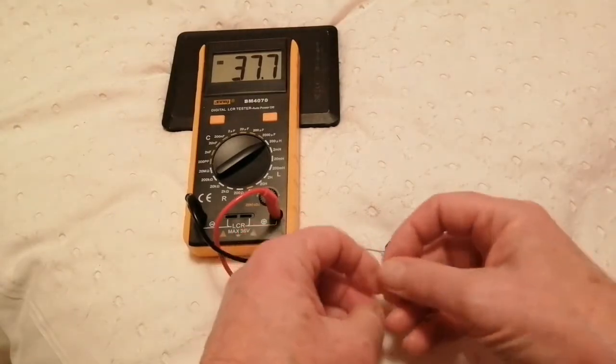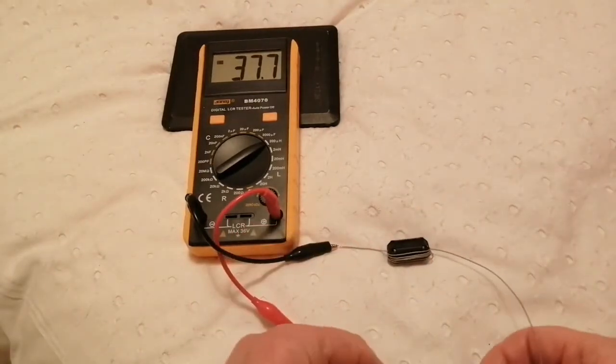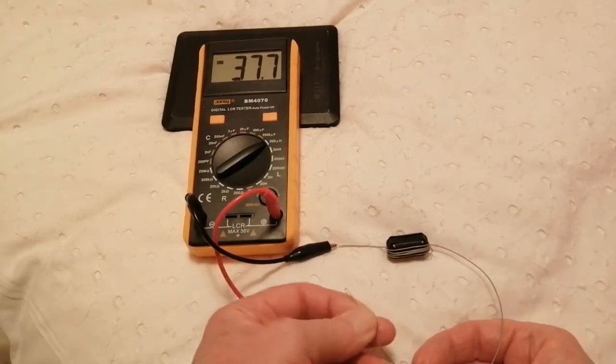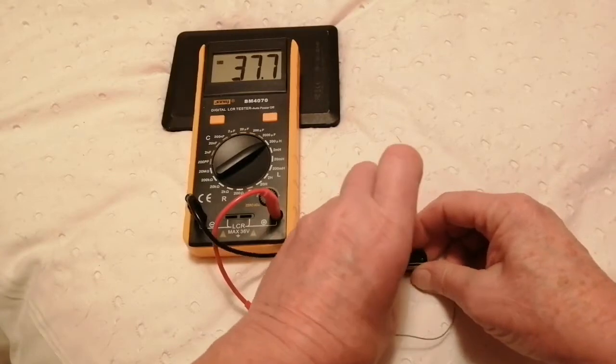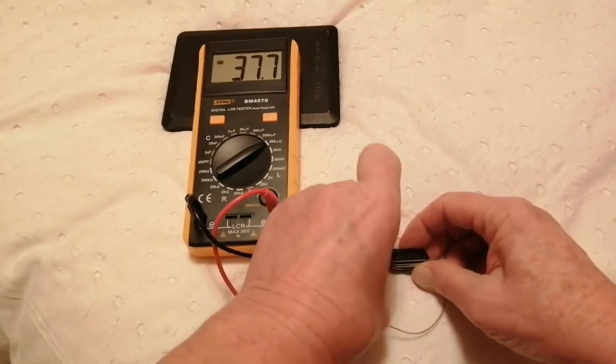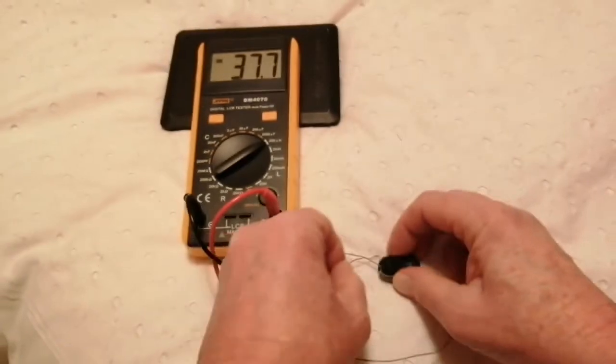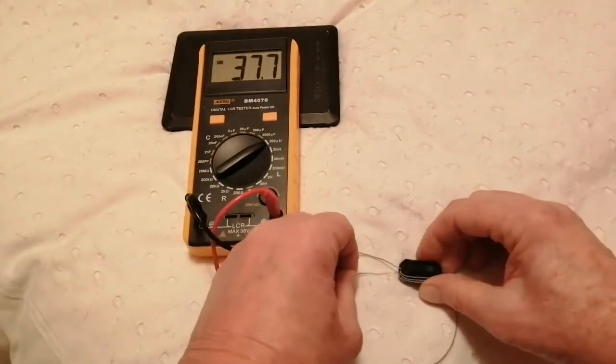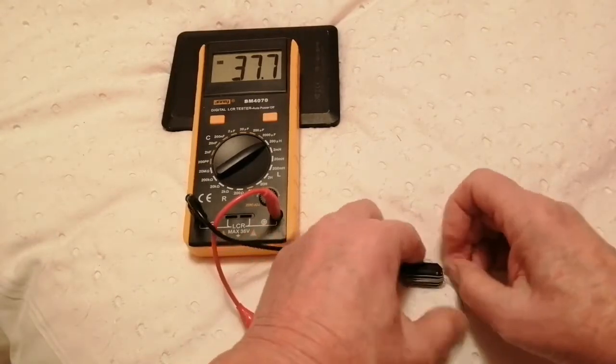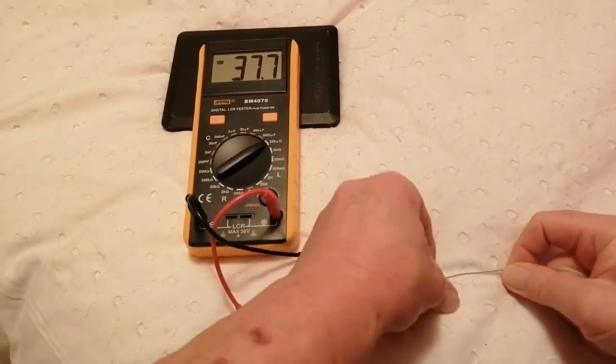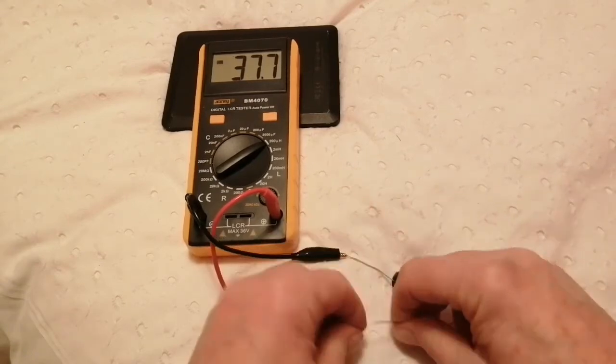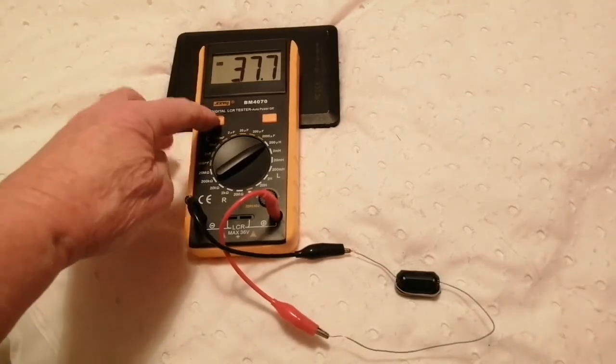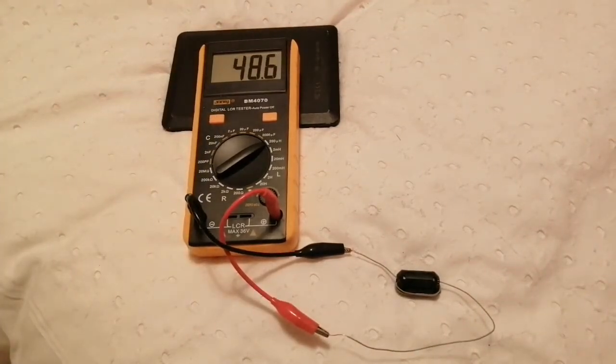You can see the more times you can pass the wire through the core, the more effective it is. If you remember, it was only about 0.7 of a microhenry for the first pass through. And that's getting a bit difficult to go through now. I shouldn't have bent that end over.